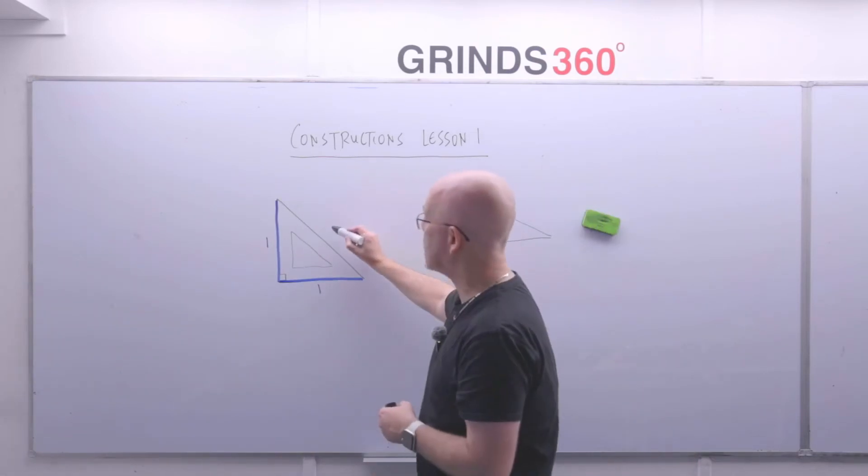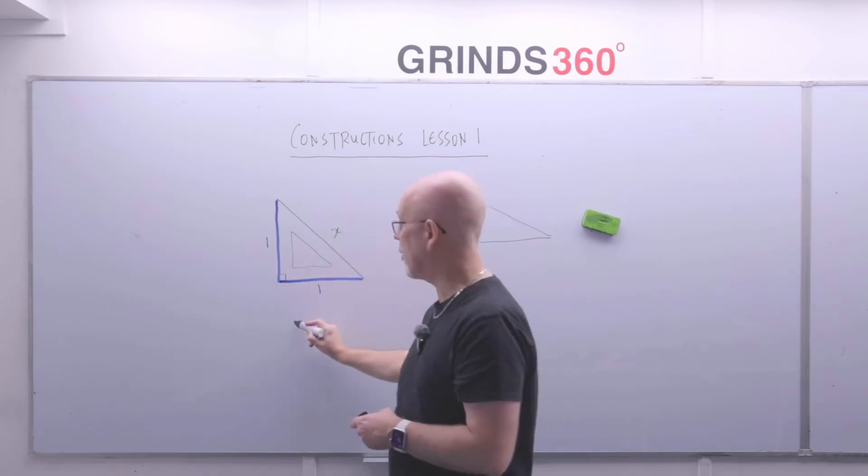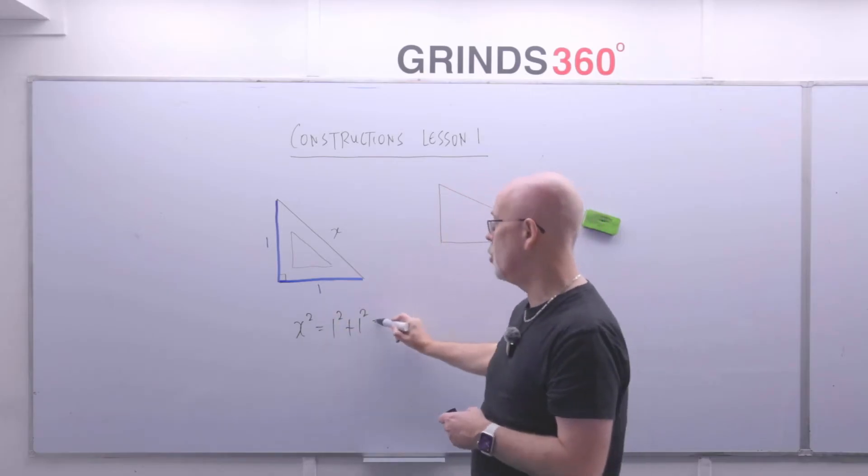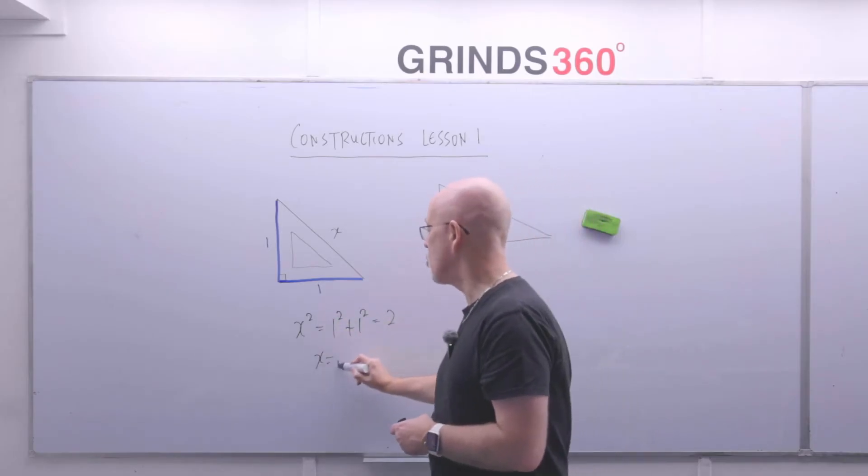So how long would the remaining side in that triangle be? So if you call that x there, well because it's a right angle triangle, if you use Pythagoras, x squared is one squared plus one squared, and one squared plus one squared is two, that means x is root two.